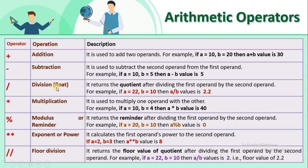The division operator is also called the float division operator. When we implement this operator it returns the quotient as a float. For example, if a = 22 and b = 10, then a / b gives 2.2. In C, C++, and Java, the division operator returns only 2 because it performs integer division. But the difference in Python is that this division operator is used to get the float value.